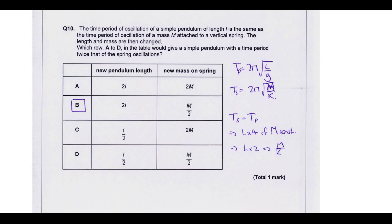The time period of an oscillation of a simple pendulum length L is the same as the time period for a mass M on a spring. So what I've done here is I've got the two equations - one of the pendulum, one of the spring. The length and mass are now changed. Which row would give a simple pendulum with time period twice that of the spring oscillation? Originally the two time periods were equal to each other. But if we want the time period of the pendulum to be double that of the spring, what we'd have to do is multiply this L by 4. So when that 4 got square rooted that would end up being double. So what we need is L to be multiplied by a factor of 4 if M is constant, or L to be multiplied by a factor of 2 if M is halved. And we can see that's this one, option B.